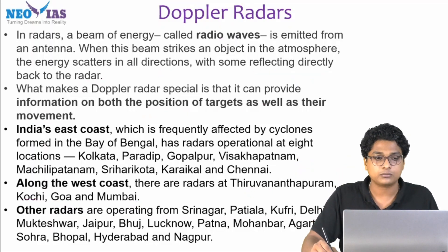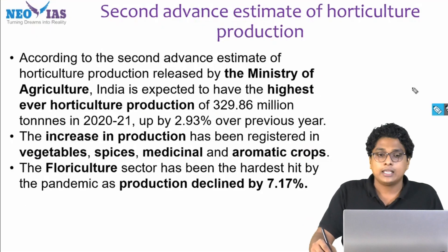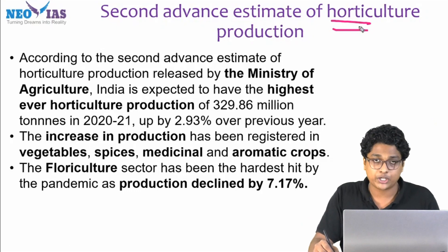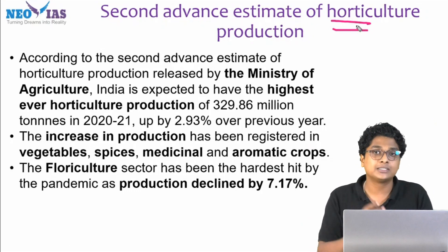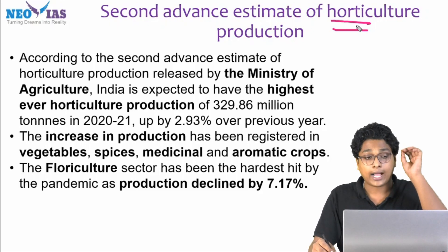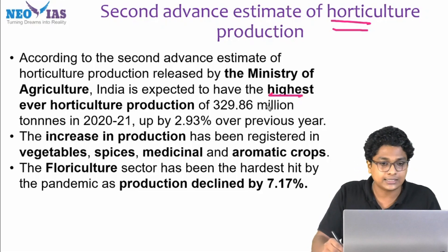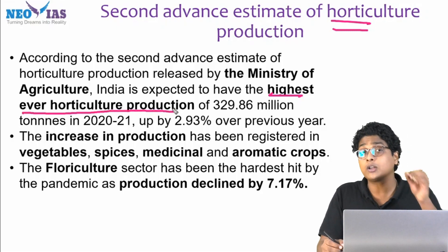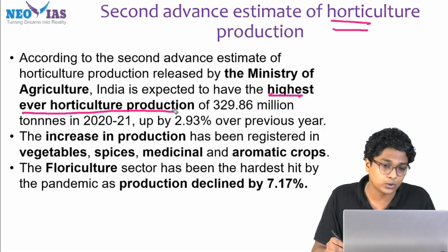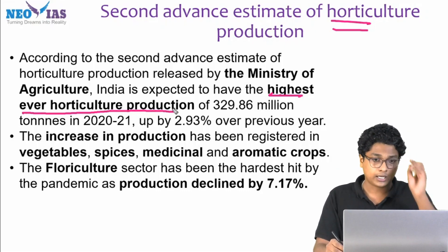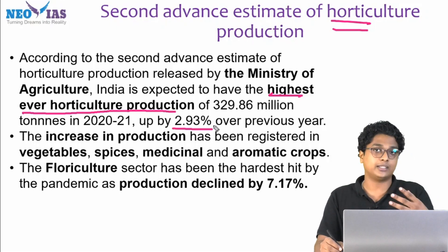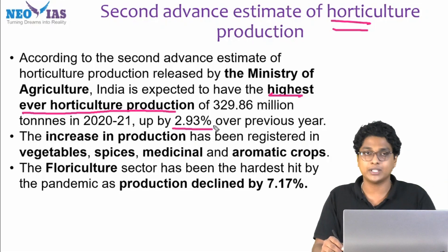The next topic is horticulture production. The second advance estimate of horticulture production was given out by the Ministry of Agriculture. Based on this, India has recorded its highest-ever horticulture production. Under horticulture, we have fruits, vegetables, flowers, etc. Based on this current data, we have a 2.93% increase in horticulture production when compared to the previous year.